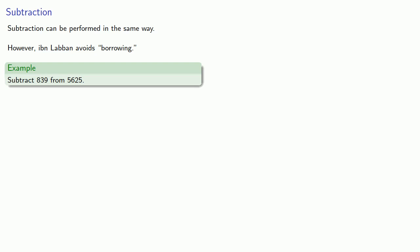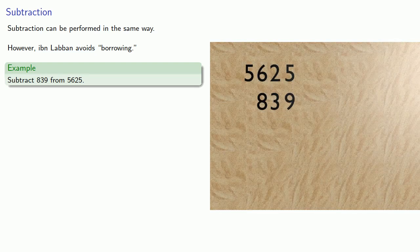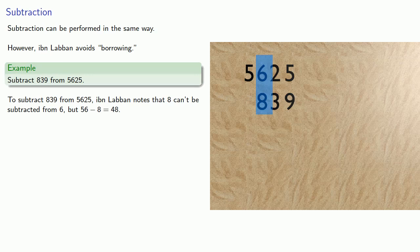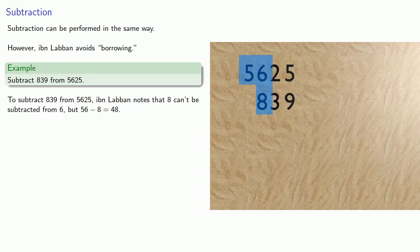So using the same numbers, let's subtract 839 from 5625. Ibn Laban notes that 8 can't be subtracted from 6, but it can be subtracted from 56. And so we get 56 minus 8 is 48.